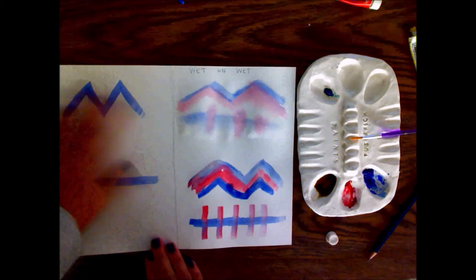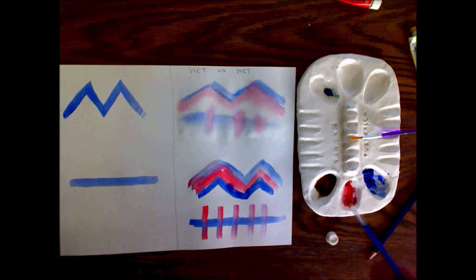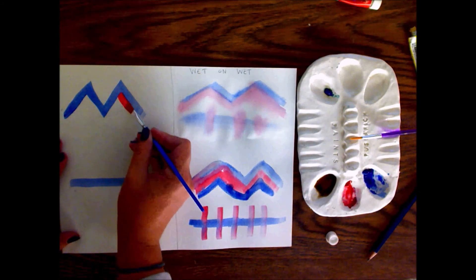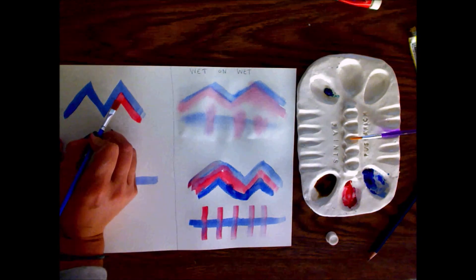It's really important that the paper doesn't feel wet before you paint next to it if you're using this technique, because if it feels wet the fibers are still probably damp and they will still pull the wet paint into them. So now my blue is dry. I'm going to paint my red next to it, and there is no bleed whatsoever.